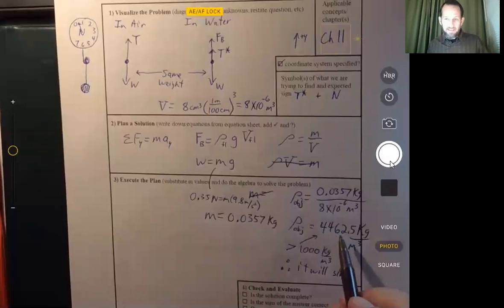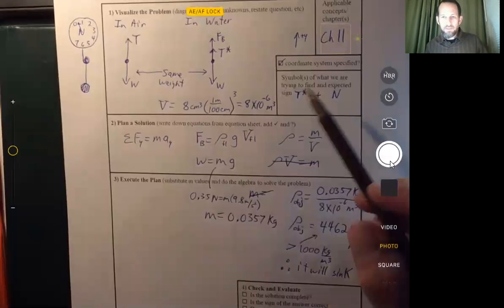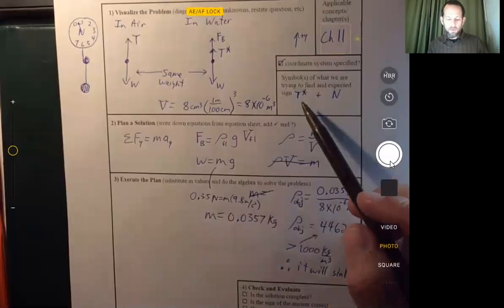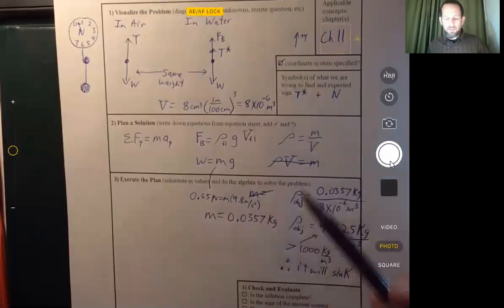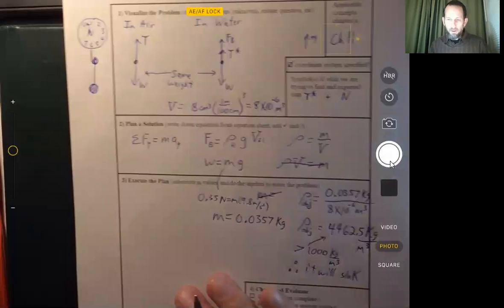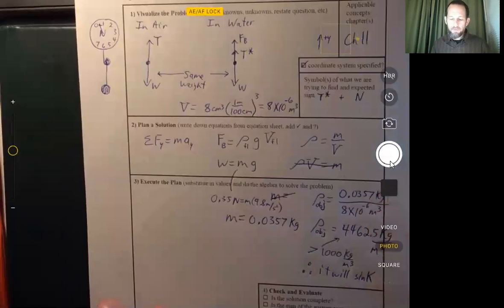that would mean it's less dense than water, and it's going to float. And then our value for T star would be zero. There would be no tension in the string, and the scale readout would be zero. The apparent weight would be zero. But it is going to sink, and so we are going to have an apparent weight. And so we can go about figuring that out.